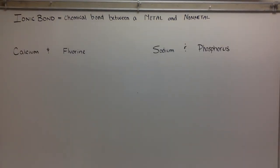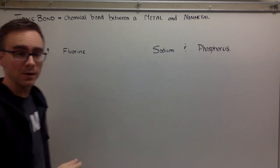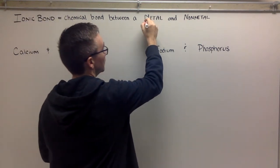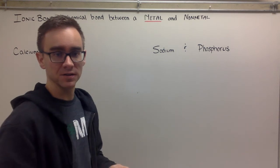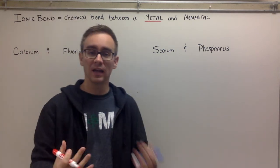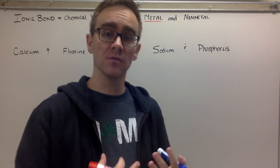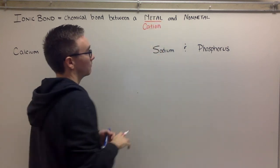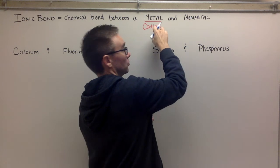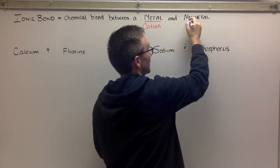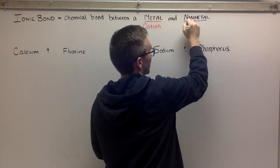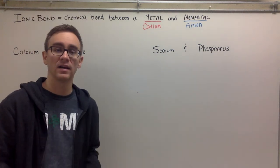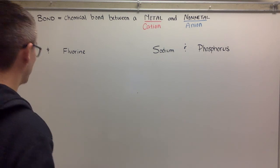First let's talk about what is an ionic bond. An ionic bond is a chemical bond between a metal and a nonmetal. So what do we know about metals and nonmetals? We're talking about gaining or losing electrons — they are forming ions. We know that metals typically form cations, meaning they're looking to lose their electrons. Nonmetals are always looking to gain electrons and thus are forming anions. So another way to say this: an ionic bond is a chemical bond between a cation and an anion.